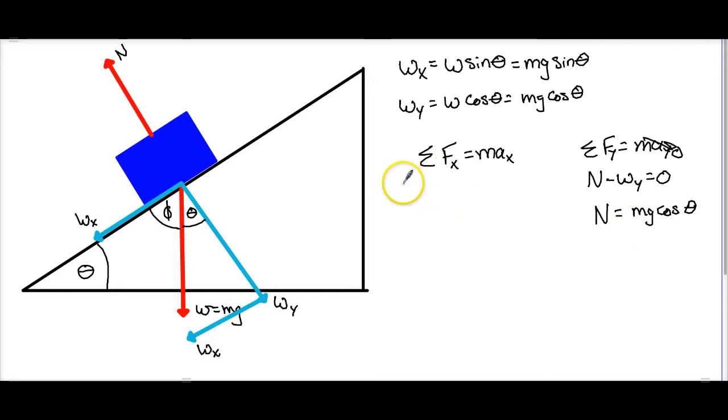If we go back to the x side, we see that we have w sub x equals mA sub x, and really that a sub x is just a, because it is the only acceleration that's left over. And w sub x we can see is the only thing in the x direction. Now we're going to take up the ramp to be positive and down the ramp to be negative, so that w sub x then becomes a negative sign there. And we know from up here that w sub x is equal to mg cosine theta is equal to mA.